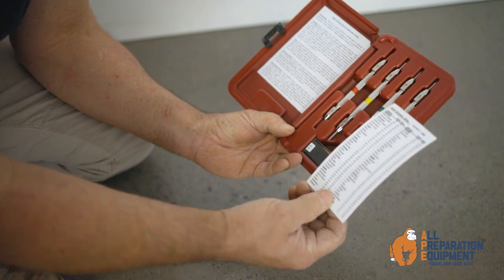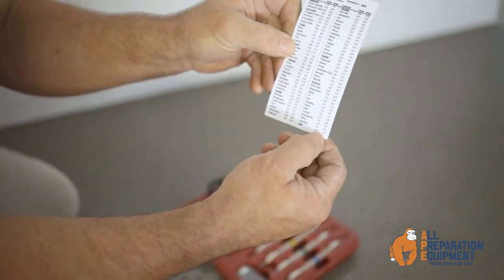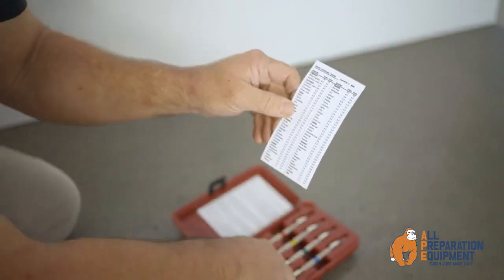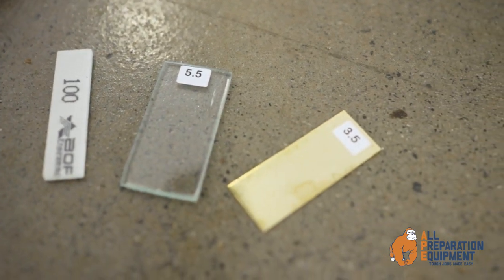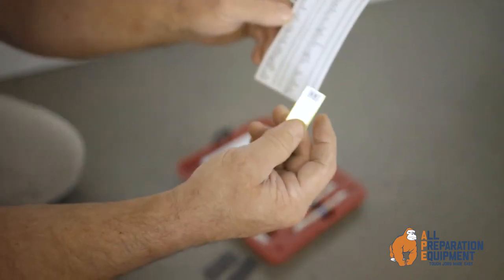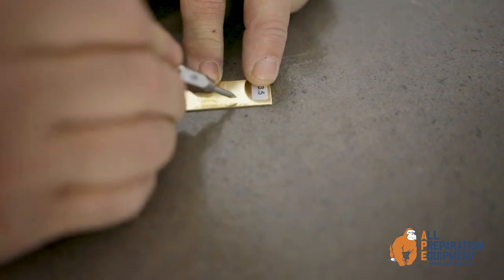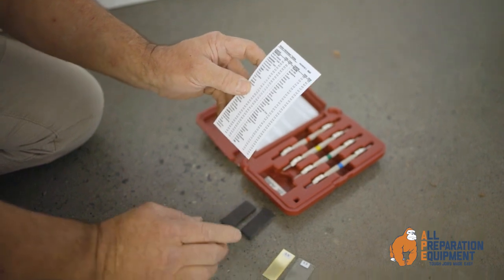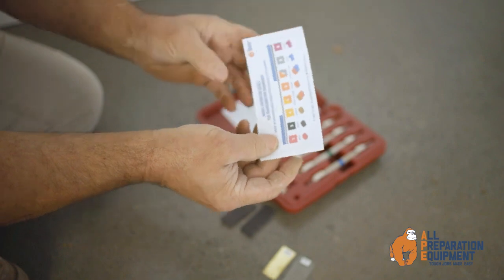In your Mohs Hardness Test Kit you'll find a chart ranging from talc having a hardness of 1 through to diamond having a hardness of 10. Also in your test kit you'll find two sample plates: one being glass which has a 5.5 hardness scale and brass which has a 3.5 hardness. This will give us an indication when we scratch either of these two items as to where the concrete sits in relation to the overall range from 1 to 10. Then we can select our diamonds.